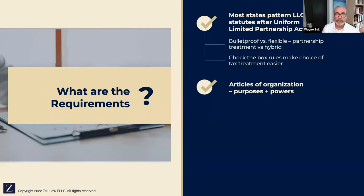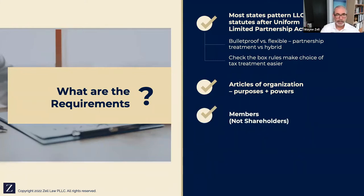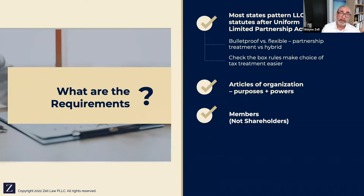All of this can be modified in something called an operating agreement or limited liability company agreement. LLCs have members, not shareholders. Members own membership interests — sometimes referred to as units — in LLCs, whereas shareholders own stock in corporations. LLCs, because they're typically treated as partnerships when there are two or more owners, have a concept known as capital contributions and capital accounts — a partnership tax term used to identify what money is contributed to the entity and treat it as part of the equity.